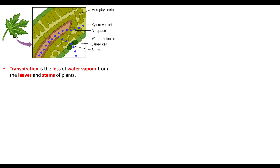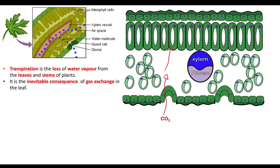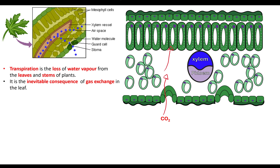Transpiration is the loss of water vapour from the leaves and stems of a plant. It's important to note it's a loss of water vapour. Water vapour — this gas — is lost from the leaves as an inevitable consequence of gas exchange. The leaves have stomata that need to open to allow carbon dioxide in so that the plant cells can photosynthesise.